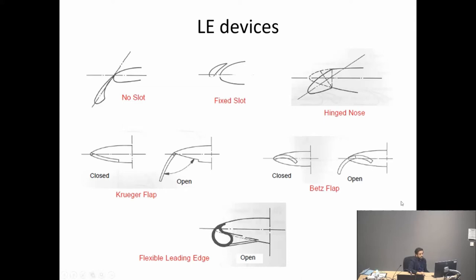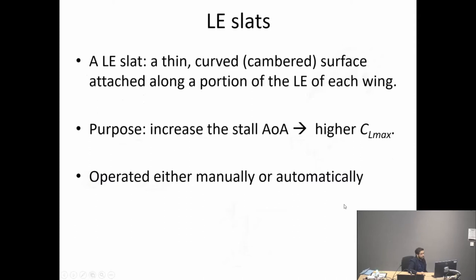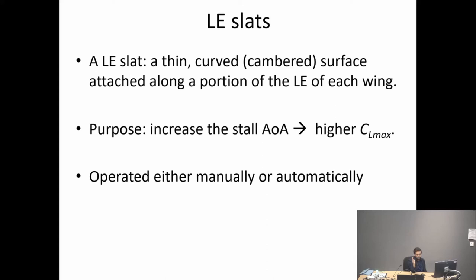I'm going to focus on three types, starting with leading edge slots, which turn out to be one of the most efficient leading edge devices. A leading edge slot is a thin curved or cambered surface typically attached to the leading edge of the wing. What it does is increase the stall angle of attack — if you increase the stall angle of attack, you effectively get more lift and a higher CL max, delaying the point at which stall and flow separation occur.